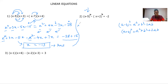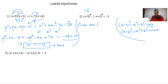Opening (x − 5)²: we get x² + 25 − 10x. Why −10x? Because −2ab = −2×x×5 = −10x. Now opening (x + 2)²: using a² + b² + 2ab, we get x² + 4 + 4x.